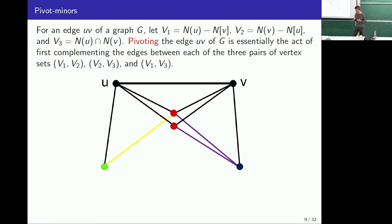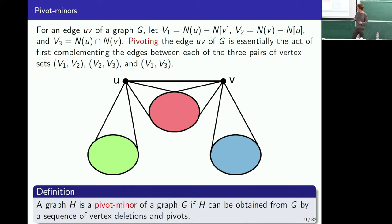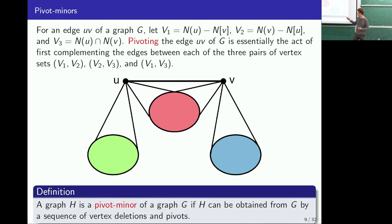It's quite a weird operation when you first see it, but there's a lot of beautiful theory going on. A graph is a pivot minor of another graph if you can obtain it from a sequence of pivots and vertex deletions.